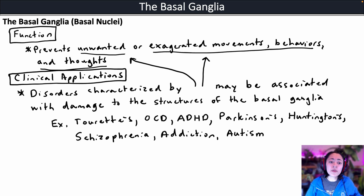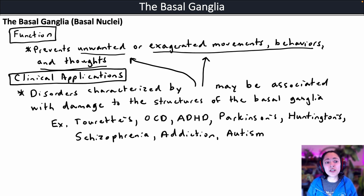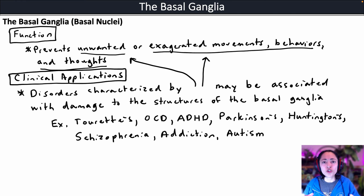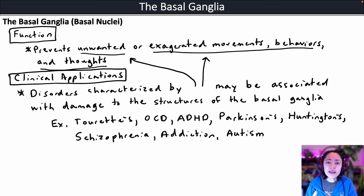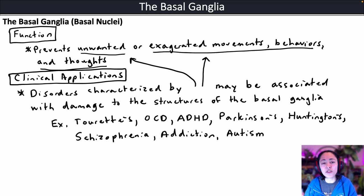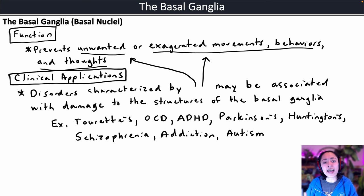You may be able to think of other disorders also associated with unwanted or exaggerated movements, behaviors, and thoughts. These masses of gray matter deep within the brain that make up the basal ganglia are really important in modifying your movement, behaviors, and thoughts, and preventing unwanted or exaggerated movements, behaviors, and thoughts.